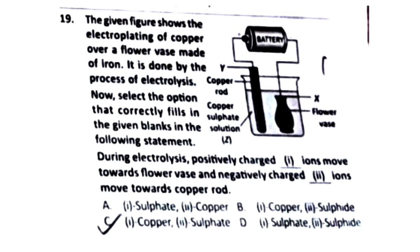Question 19: The figure shows electroplating of copper over a flower vase made of iron by electrolysis. During electrolysis, positively charged copper ions move towards the flower vase (cathode) and negatively charged sulfate ions move towards the copper anode. The right answer is Option C.